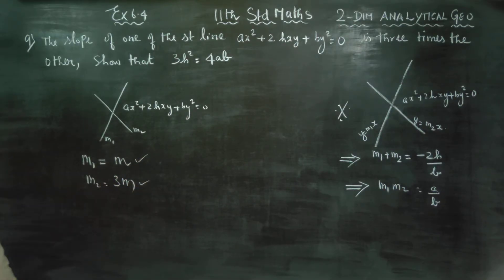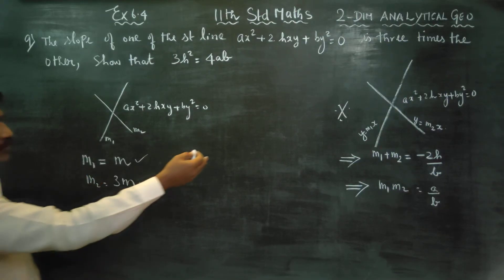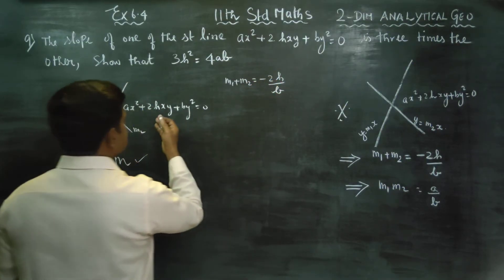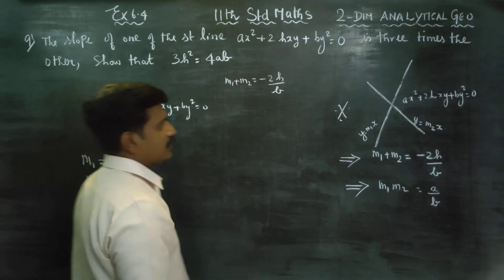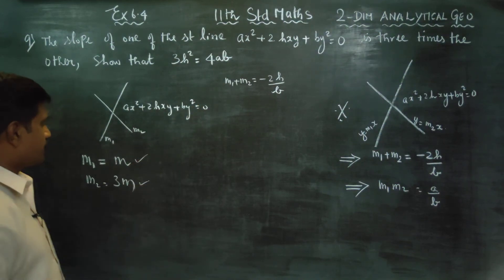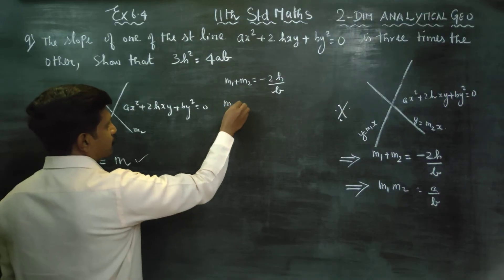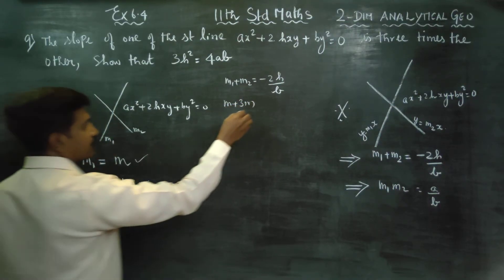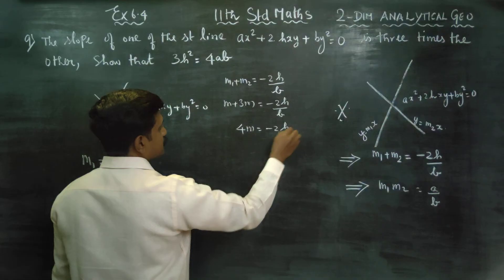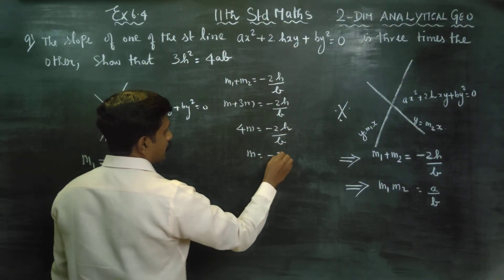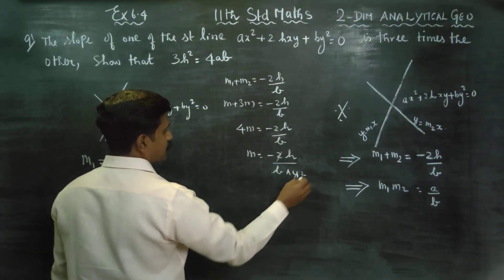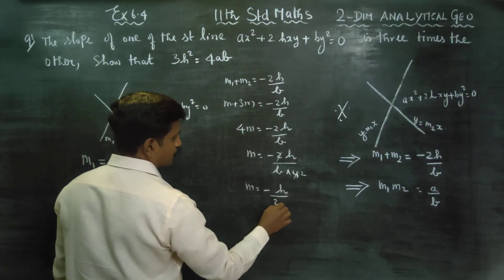If we are going to make it here, we know the formula, m1 plus m2 is equal to minus 2h by b. If you add this, you will be getting 4m is equal to minus 2h by b. Therefore, m will be minus 2h by b divided by 4. I will get 2 times. Therefore, m is equal to minus h by 2b, right?